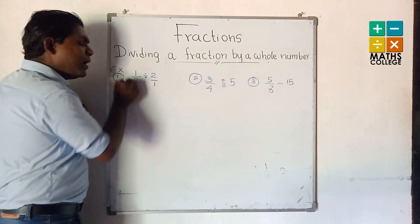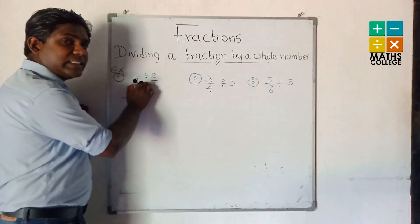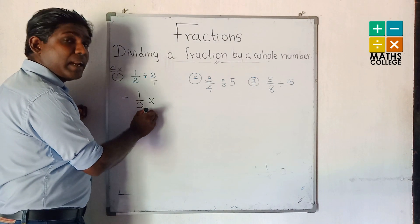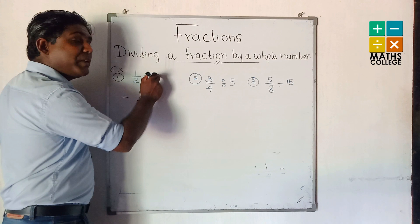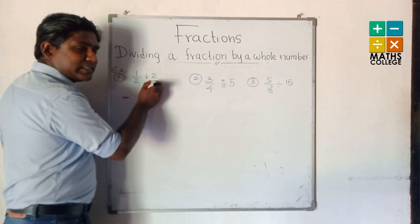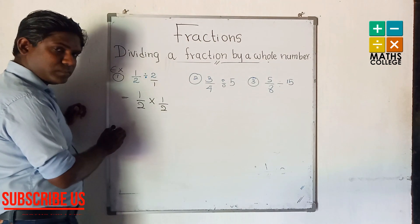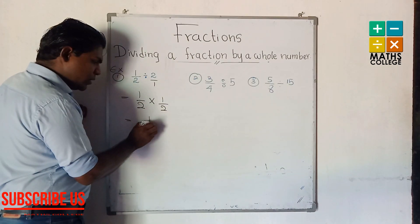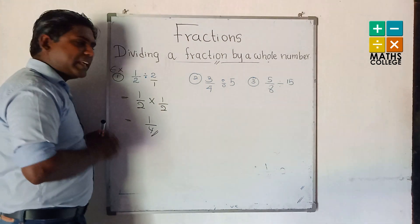This 1/2, not change. This division sign, change to multiply. But multiply by the reciprocal. What is the reciprocal? Interchange the numerator and denominator of this fraction. We write 1 upon 2. So: 1 multiply 1 is 1, and 2 multiply 2 is 4. Answer: 1/4.